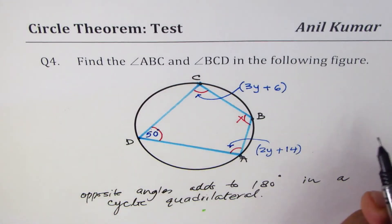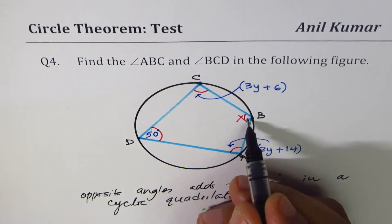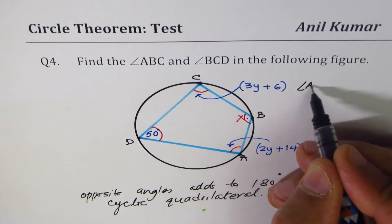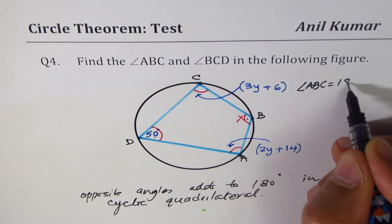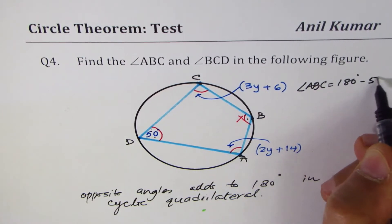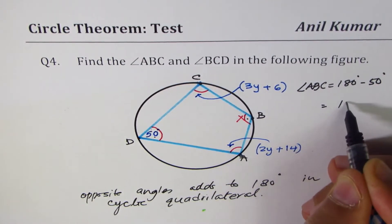So angle ABC. We'll use this angle. Angle ABC should be equal to 180 take away 50, right. And that gives us 130 degrees.